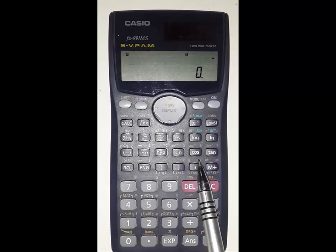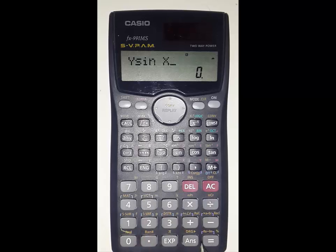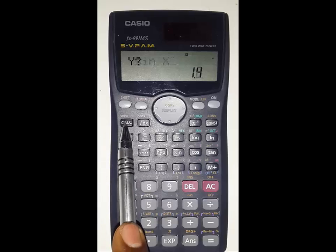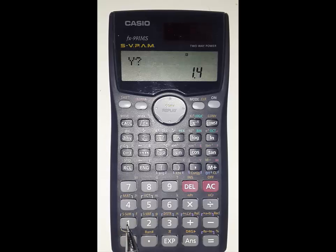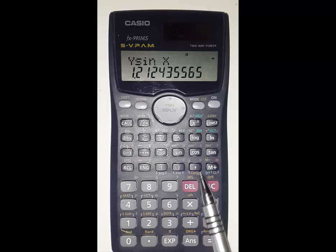Alpha Y, sin, alpha X. Calculate. Y value is 1.4. Give 1.4. Press equal to button. Press X value. X value is pi by 3. Shift pi divided by 3.